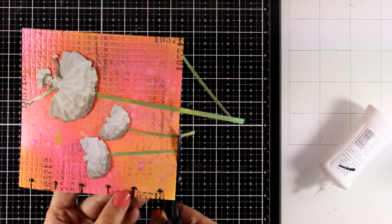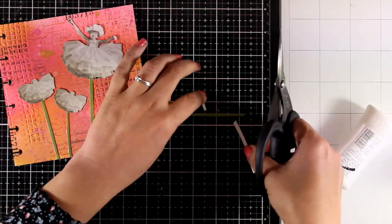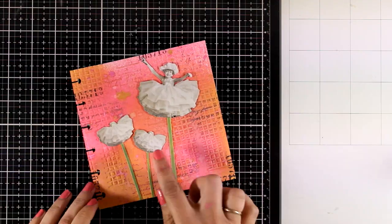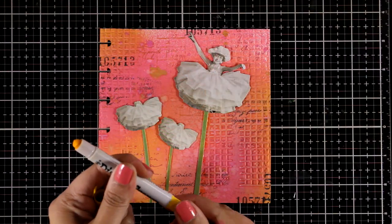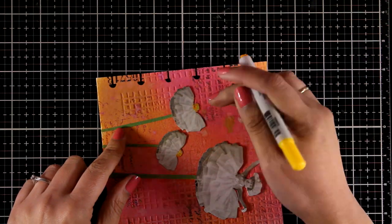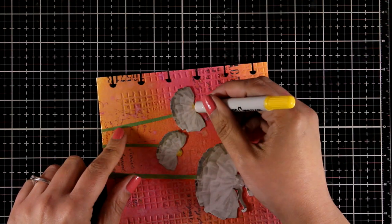I'm also going to use my scissors and cut off all the excess paper. Now I'm going to add a little bit of color at the center of the flowers. For that, I'm going to use my Distress crayons. I'm going to add a touch of yellow at what is now the center of my flower.